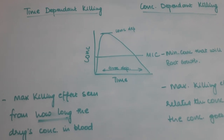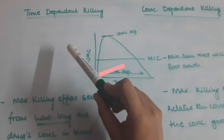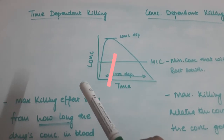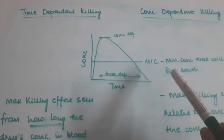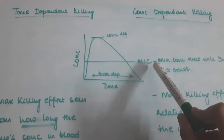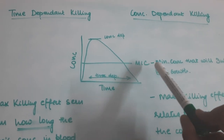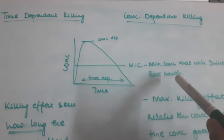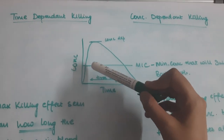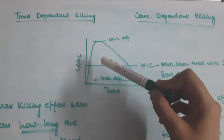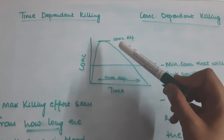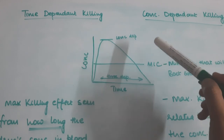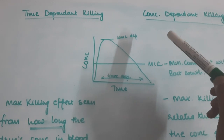Hello everyone. In this video we will talk about time-dependent and concentration-dependent killing of antibiotics. But first we will talk about minimum inhibitory concentration (MIC). This is the minimum concentration that will inhibit bacterial growth. Any concentration in blood of the antibiotic above the minimum inhibitory concentration will lead to killing or inhibition of the particular bacteria.